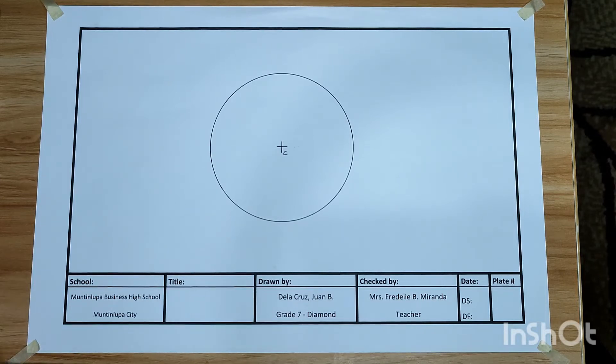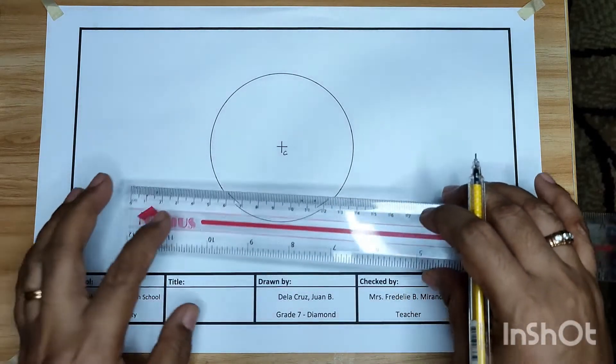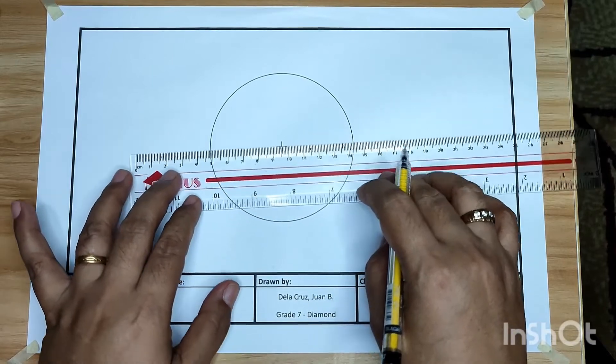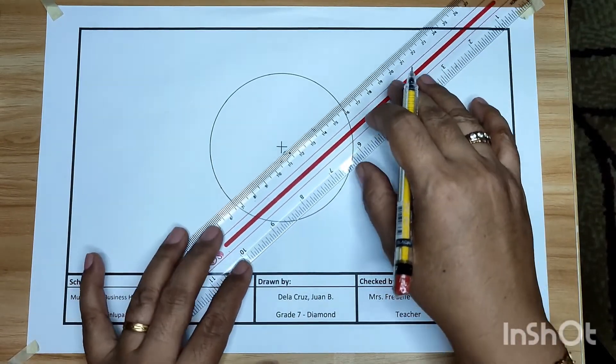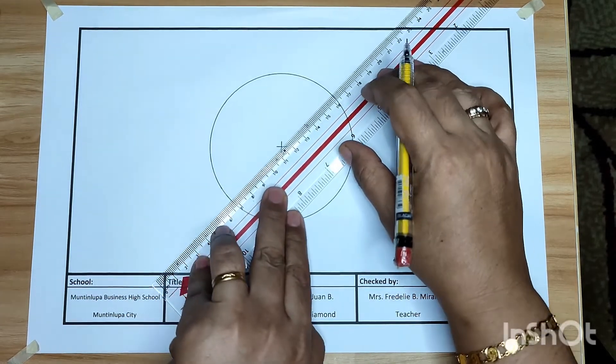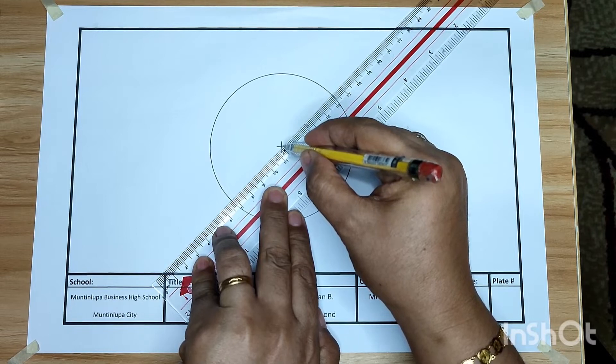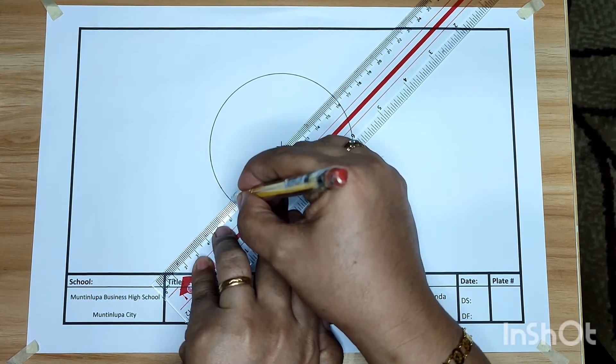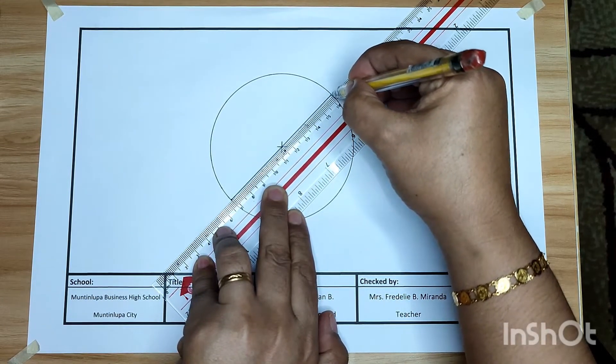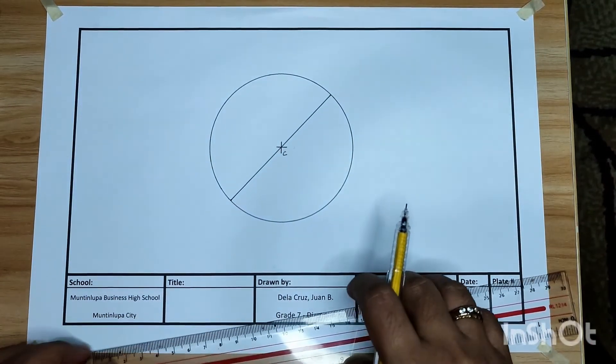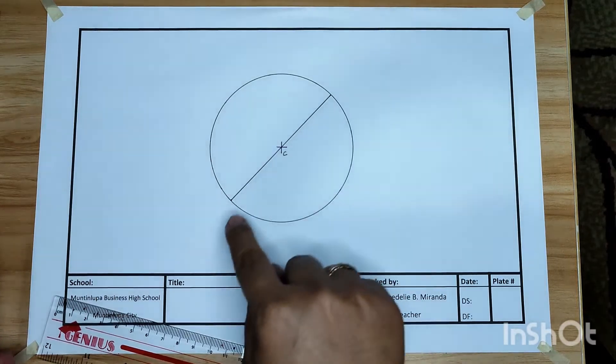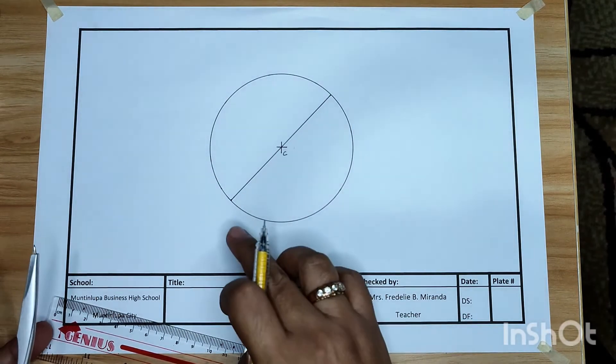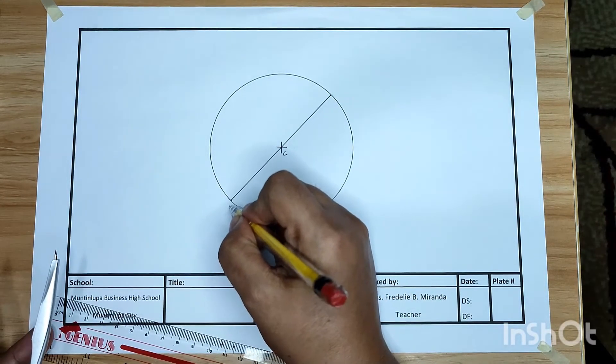Draw a straight line passing through the center or point C on the circle, as long as it passes through point C. Let us try in this direction. It passes through the center from our circle circumference. Let us name this line A and B.